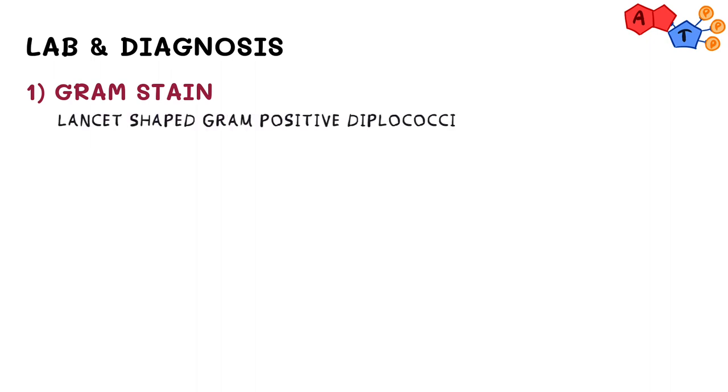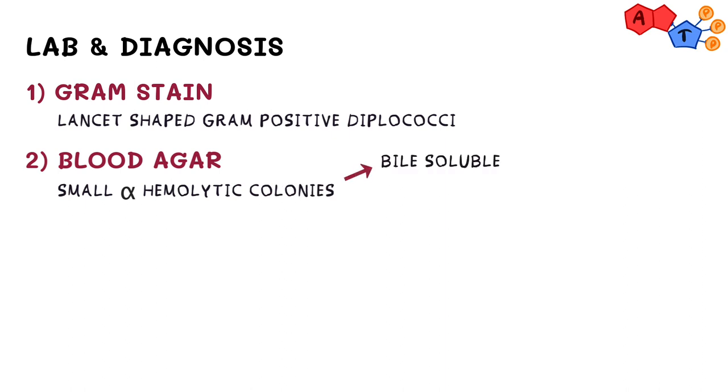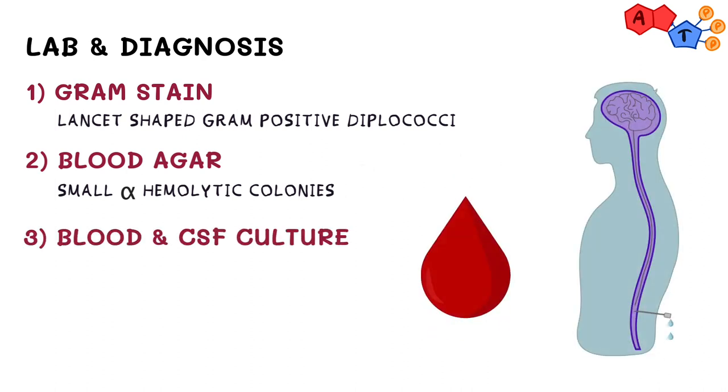So, how can we diagnose patients with streptococcus pneumoniae? We have various ways to do so. First, the organism can be detected in the sputum as lancet-shaped gram-positive diplococci using gram stain. Secondly, on blood agar, pneumococci form small alpha hemolytic colonies. These colonies are bile soluble and their growth is inhibited by optochin. Blood and cerebrospinal fluid cultures can be done, which also aid in the diagnosis.